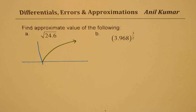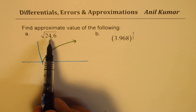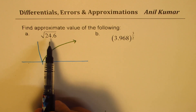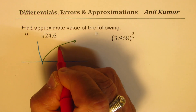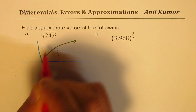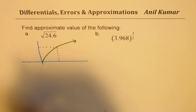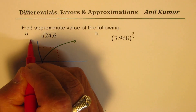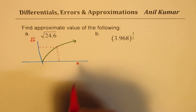Now, we know the square root of a few numbers. For example, the closest to 24 is 25, and its square root is 5 — we know that. So what we will try to do is work around a point which is known to us. This point is known to us and we know that this is square root of x, and this is x for us.